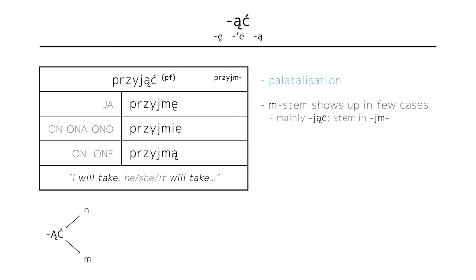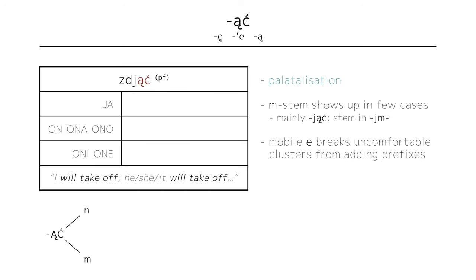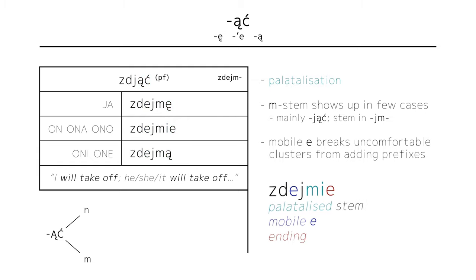In some cases, you might come across something called the mobile e, which is an e that appears in certain cases to ease pronunciation. Take the word zdjąć, to take off, as in clothes. If we try to conjugate it as per our little rule, we get dmę? How do you even pronounce that? This is where the mobile e comes to the rescue, giving us zdejmę, I will take off, and by extension zdejmie, he, she, it will take off, and zdejmą, they will take off.